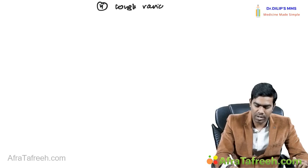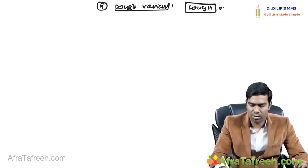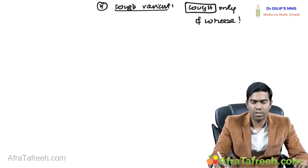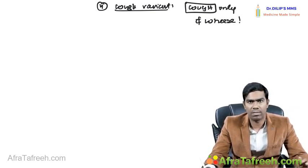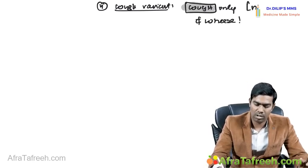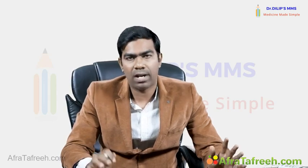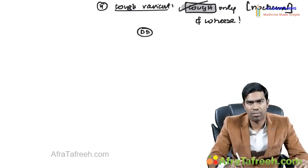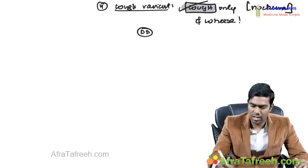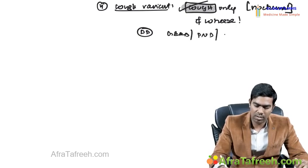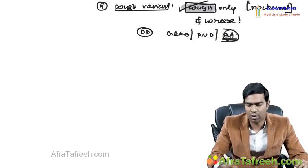Number three: cough variant asthma — another type of intrinsic asthma where the patient presents with only cough, without wheeze, typically nocturnal. These patients show bronchial hyper-responsiveness, reversibility, and all features of asthma, and respond to routine bronchial asthma treatment. Remember the top three causes of chronic cough: GERD, post-nasal drip due to sinusitis, and cough variant bronchial asthma.